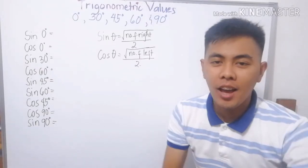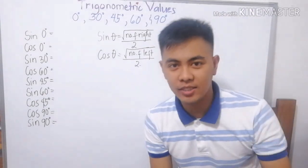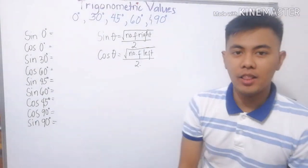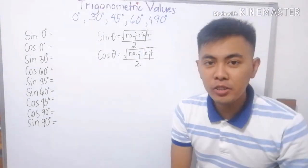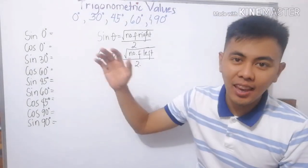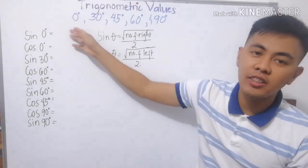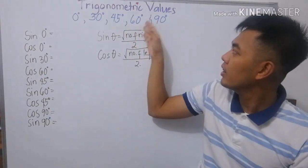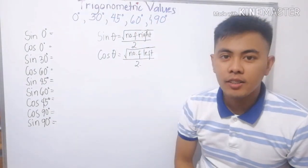Hi, and today we're going to discuss trigonometric values, but we're going to only use the special angles: 0 degrees, 30 degrees, 45 degrees, 60 degrees, and 90 degrees.